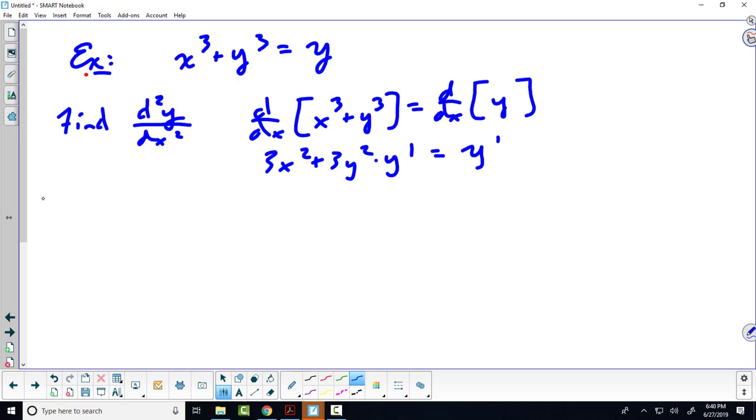I've always had a habit of solving this for y prime before taking the second derivative. So let's solve for y prime. We'll collect all the y prime terms over to one side, giving us 3x squared equals y prime minus 3y squared y prime.